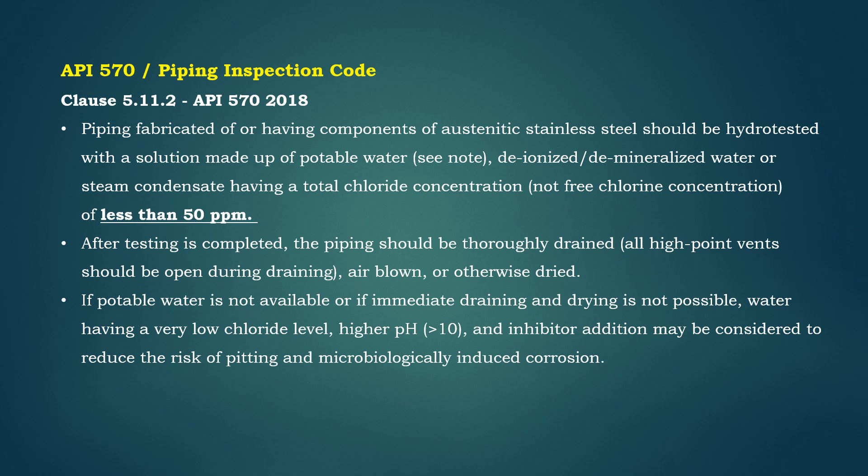Piping fabricated of, or having components of, austenitic stainless steel should be hydro-tested with a solution made up of potable water, deionized or demineralized water, or steam condensate having a total chloride concentration of less than 50 ppm. After testing is completed, the piping should be thoroughly drained, air blown, or otherwise dried.